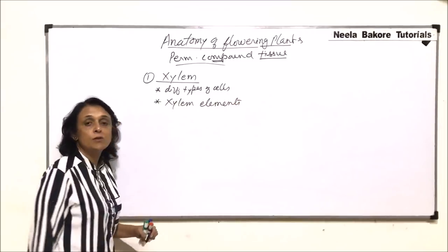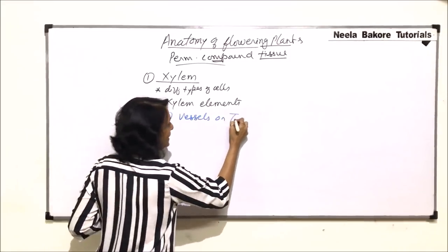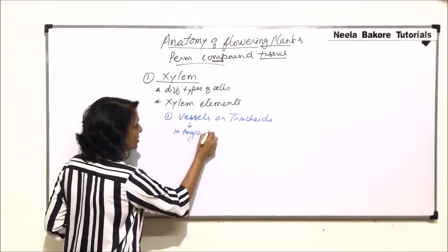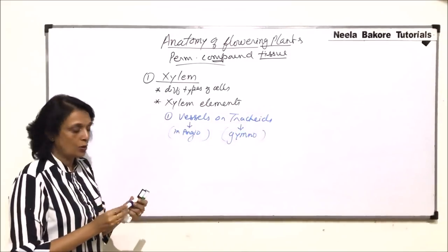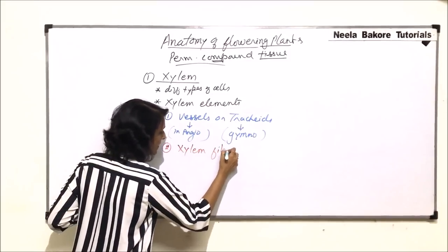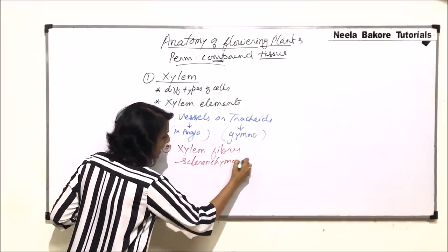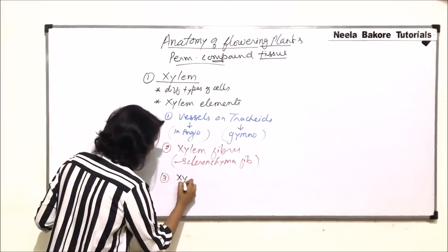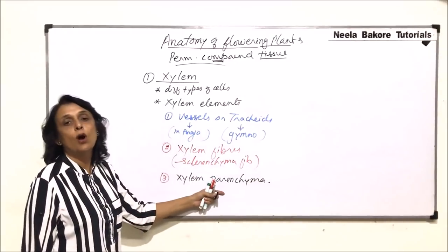Which types of cells would be kept under xylem elements? The first are vessels or tracheids. Vessels are found predominantly in angiosperms and tracheids are found in gymnosperms. The second type of cells found in xylem are known as xylem fibers, which are nothing but sclerenchyma fibers — long slender cells. The third type are xylem parenchyma cells, which are thin-walled parenchyma cells.